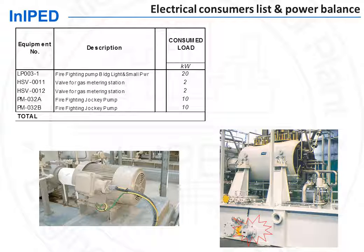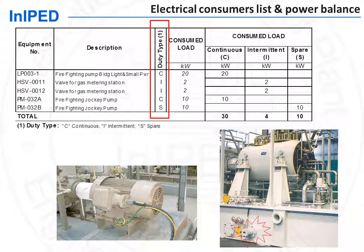Not all consumers operate at the same time. Therefore, to estimate the overall plant power consumption, one must take into account the type of operation, whether it is continuous or intermittent. This is done by identifying in the electrical consumers list the type of duty: is it continuous, intermittent, or spare? A spare equipment, for instance, operates only when another one is not operating.